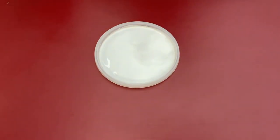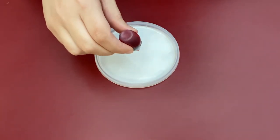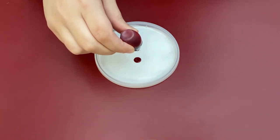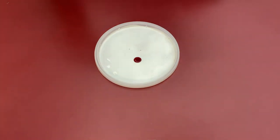Next, put no more than three drops of yellow and red food coloring in the center of the lid.